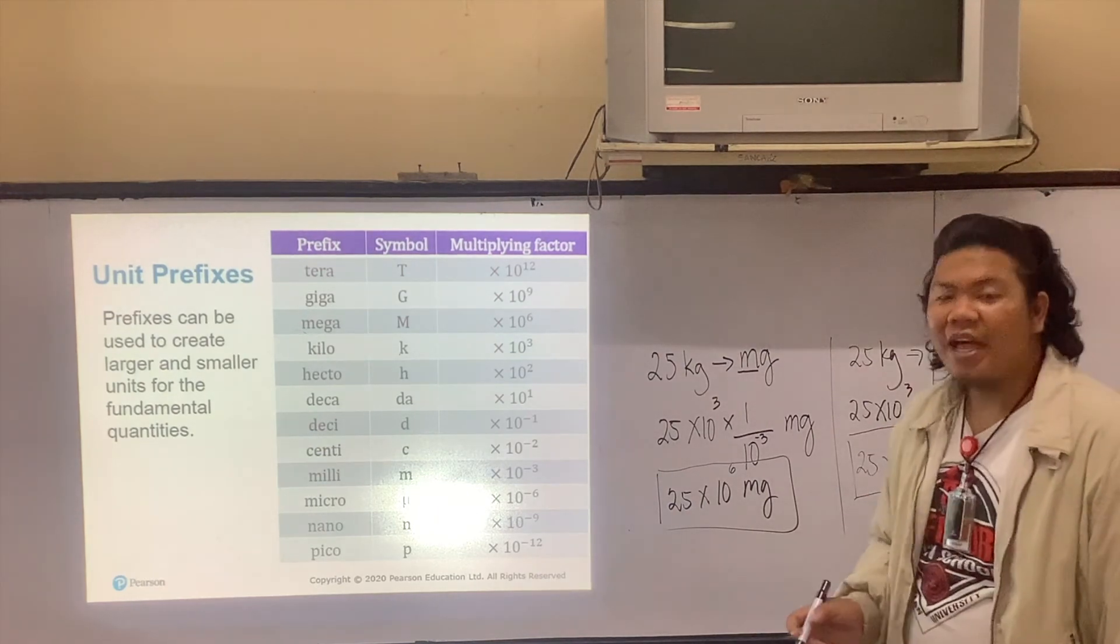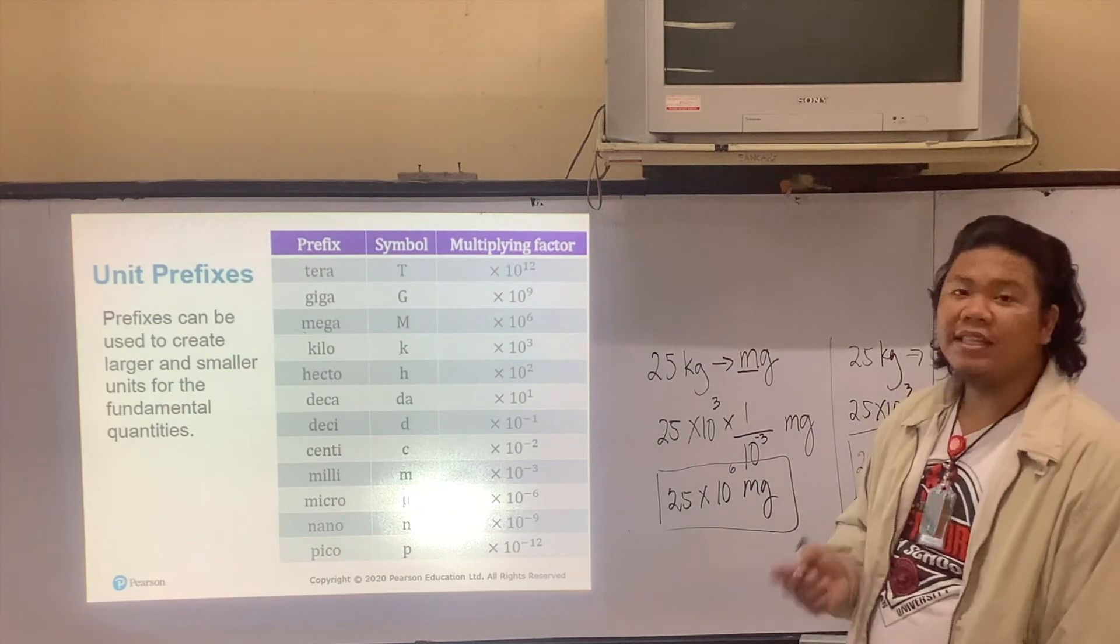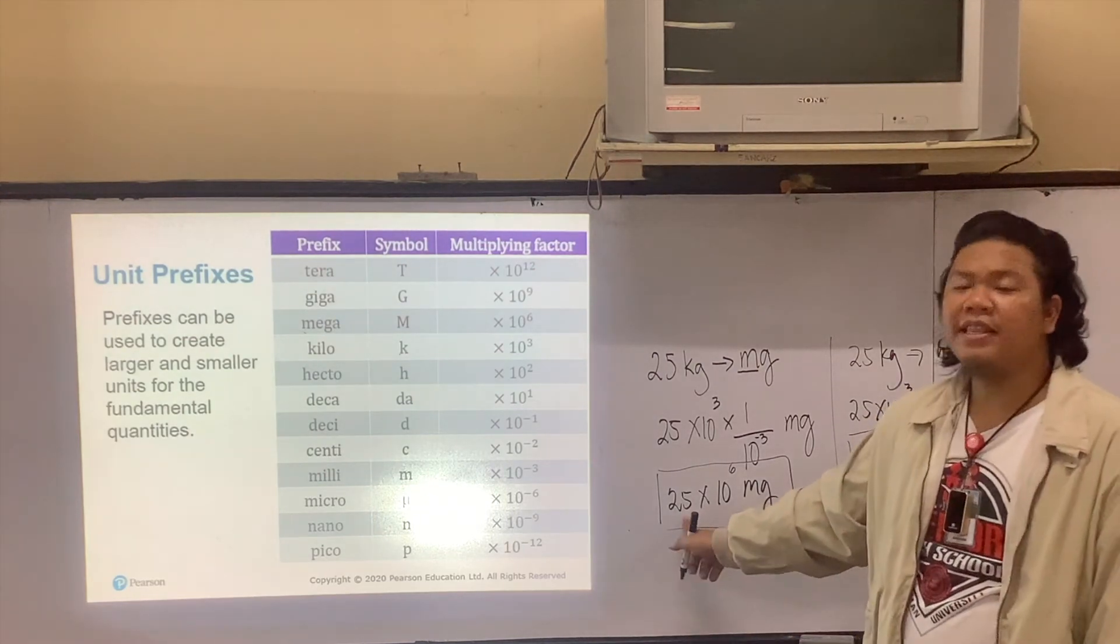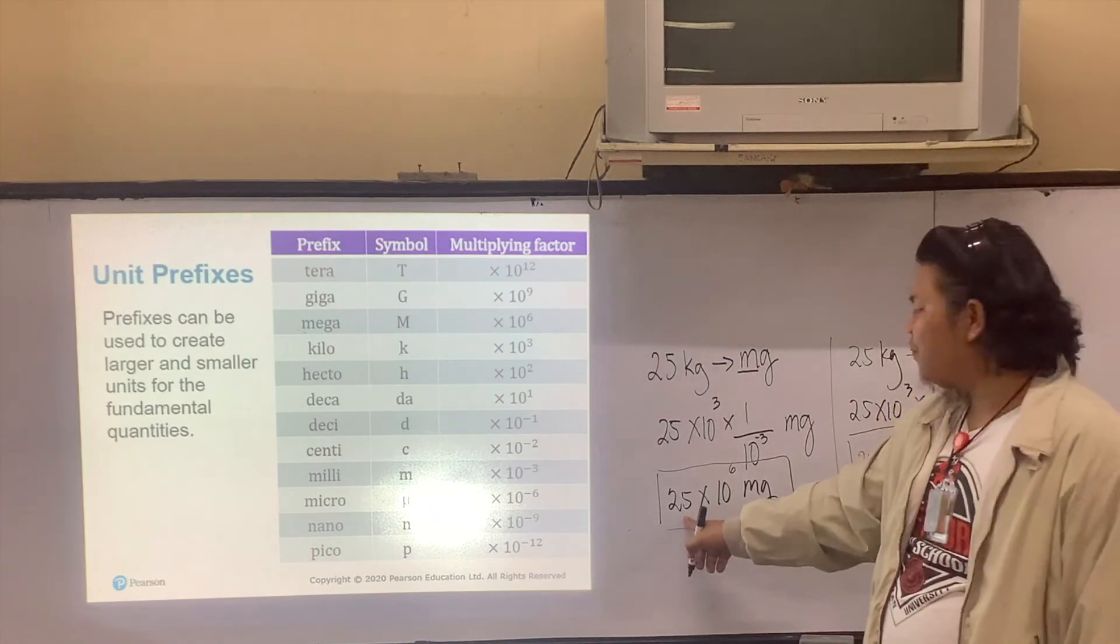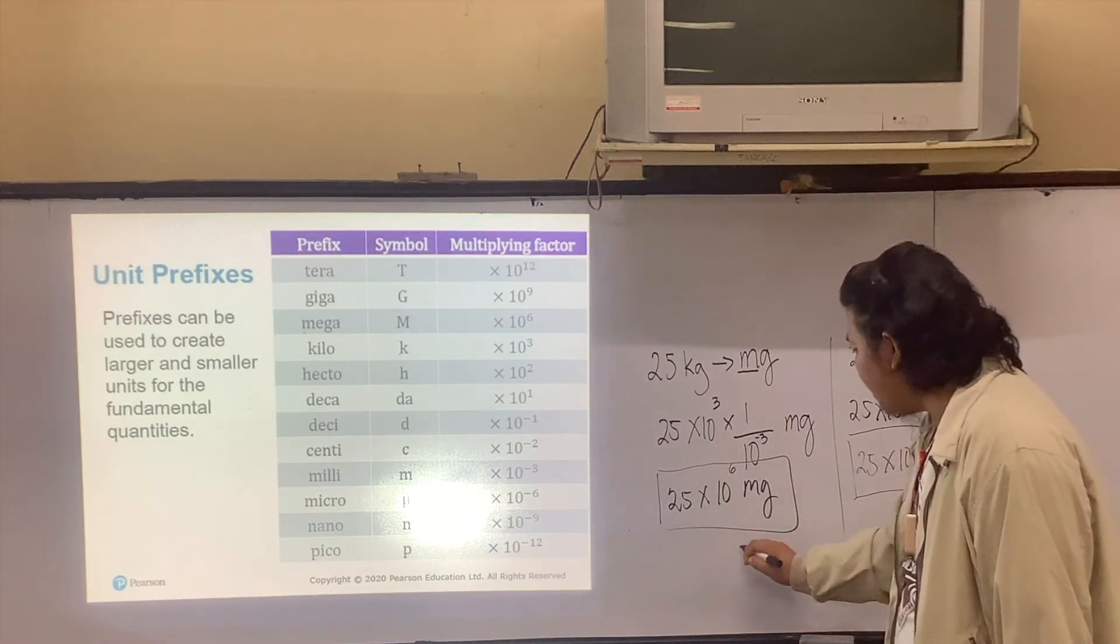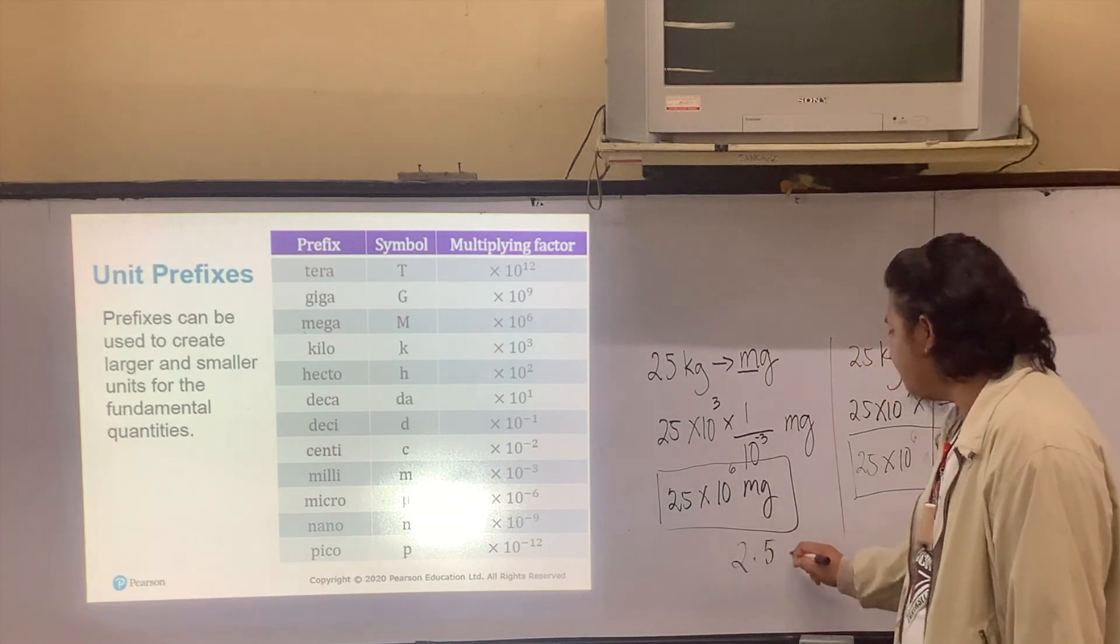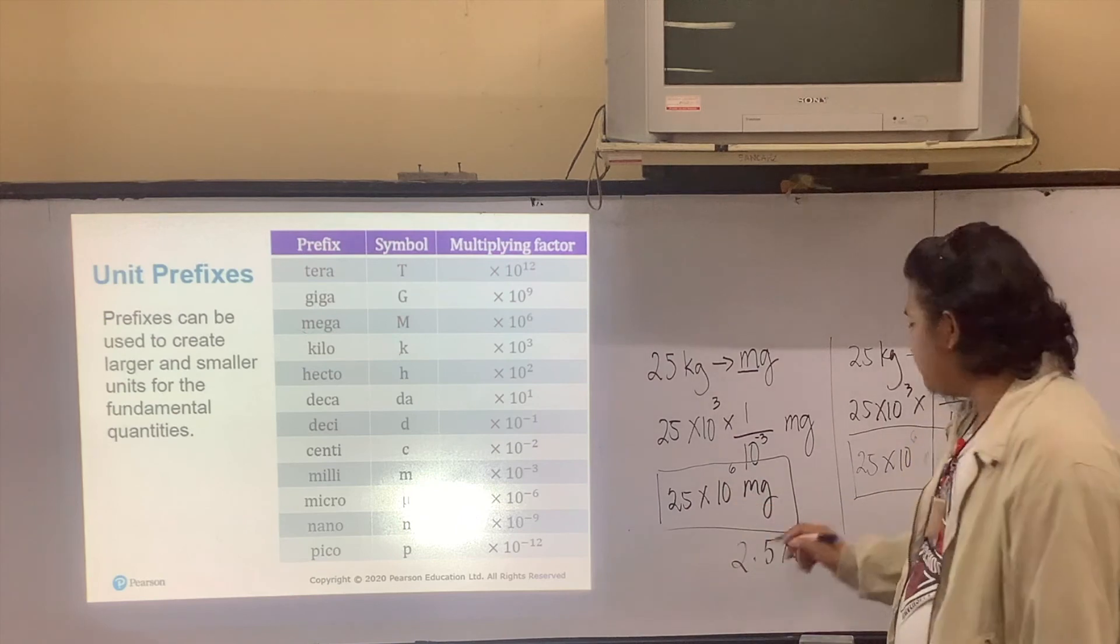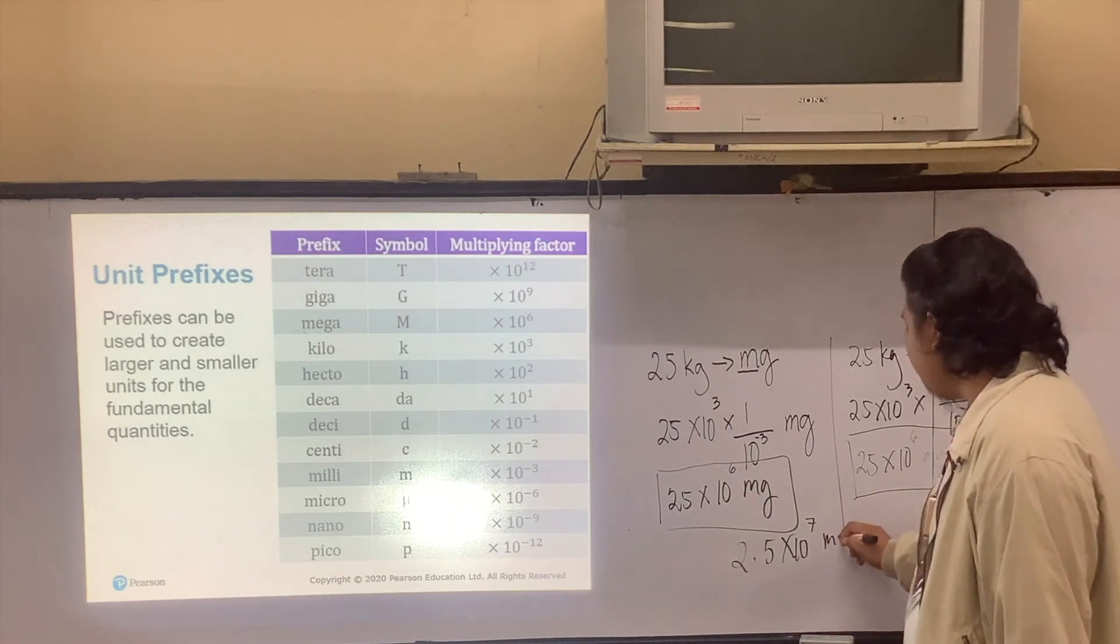However, you have to abide by the rules of scientific notation writing. Our base is greater than 10, so we have to move one decimal place to the left. This will become 2.5 times 10 to the power of 6 plus 1, which is 7 milligrams.